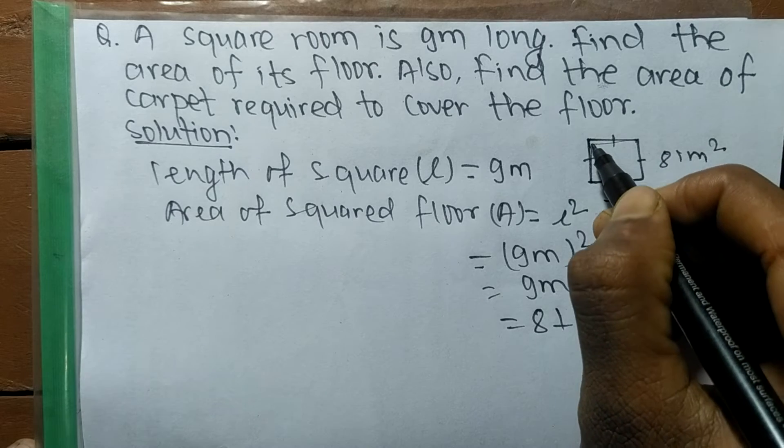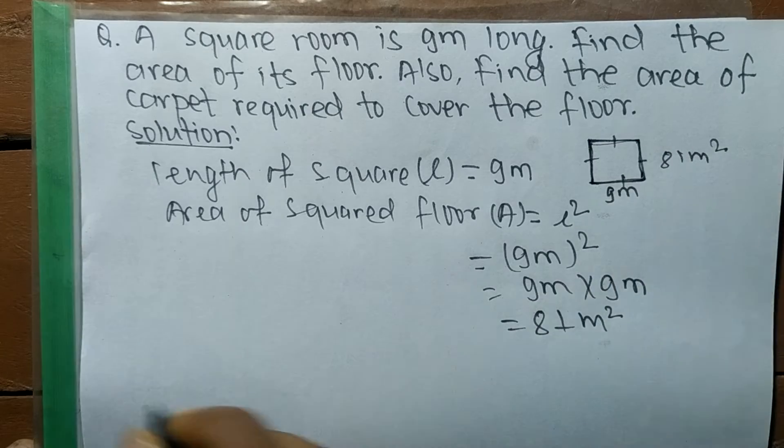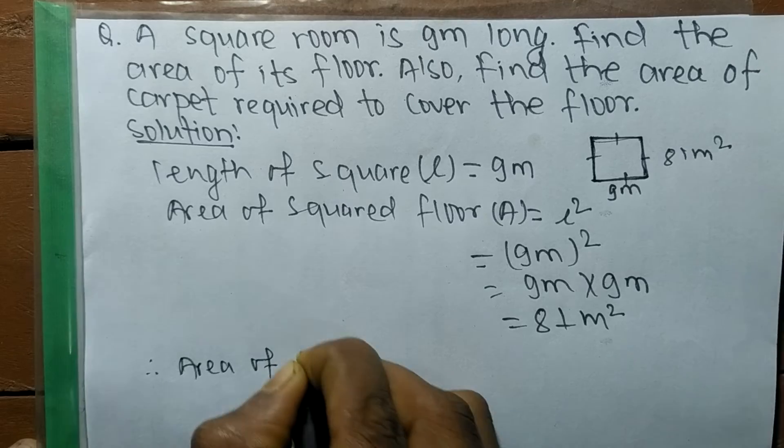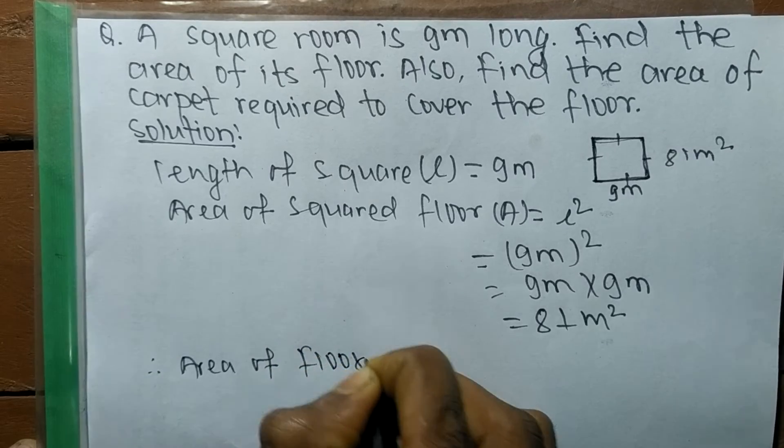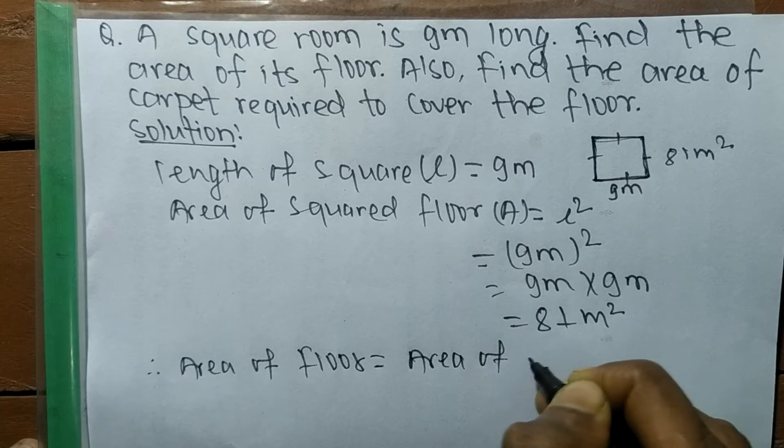Then the area of the floor is equal to the area of the carpet. So therefore, area of floor = area of carpet.